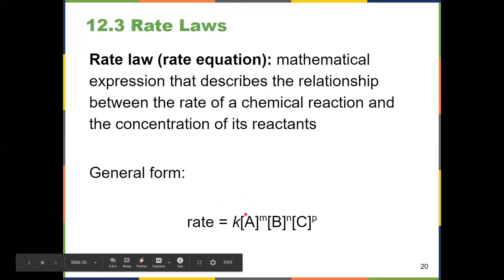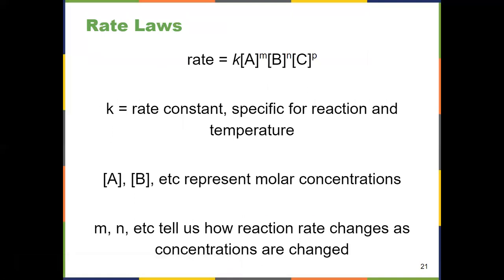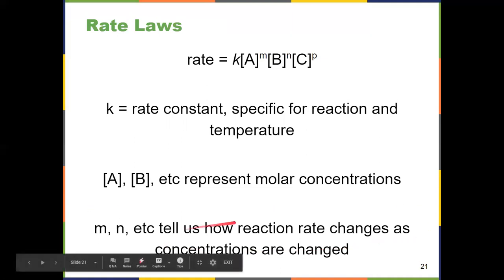The general formula: rate equals K times the molar concentration of reactants — those brackets represent molar concentrations — and each has a superscript representing the order. The order represents how the reaction rate changes as the concentration changes. These superscripts have to be determined experimentally; your reaction order has to be determined experimentally.